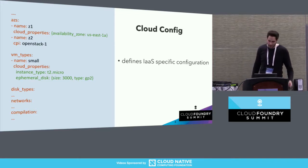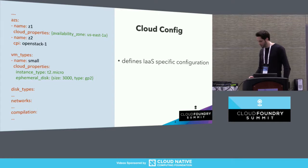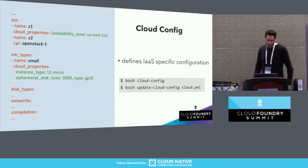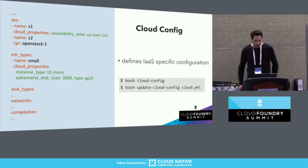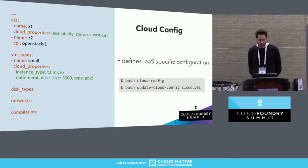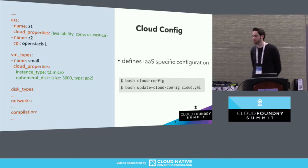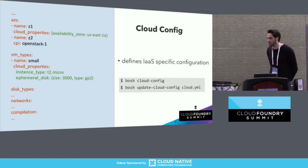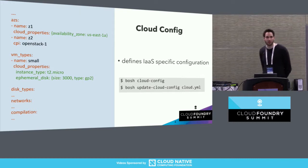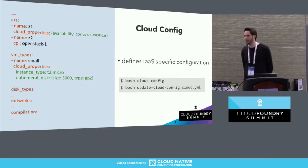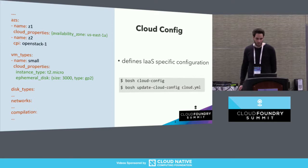The cloud config is there to define infrastructure-specific configuration once and to reference it multiple times, and it allows us to keep the deployment manifest infrastructure-agnostic. We use the BOSH CLI commands 'cloud-config' and 'update-cloud-config': cloud-config shows you the latest cloud config, and update-cloud-config lets you create or update the current cloud config on the director.